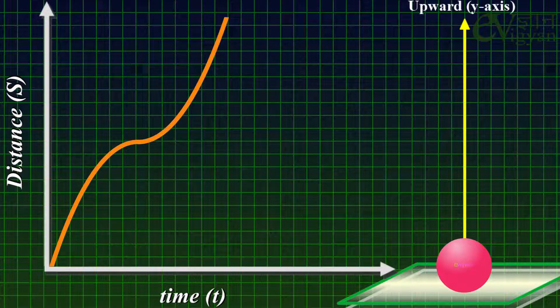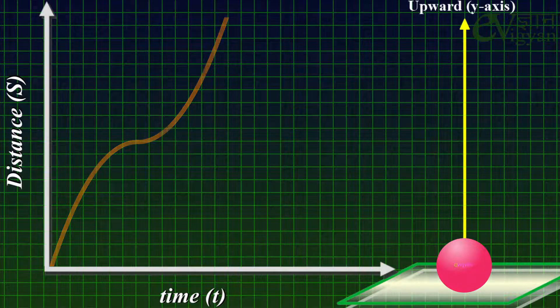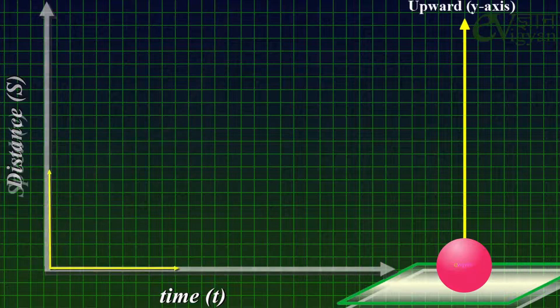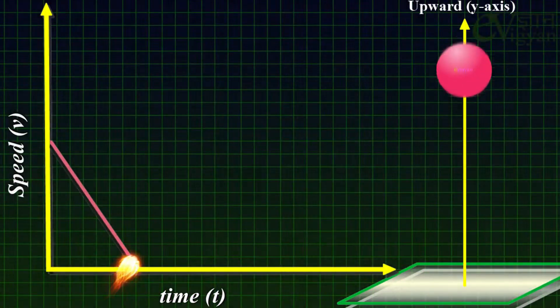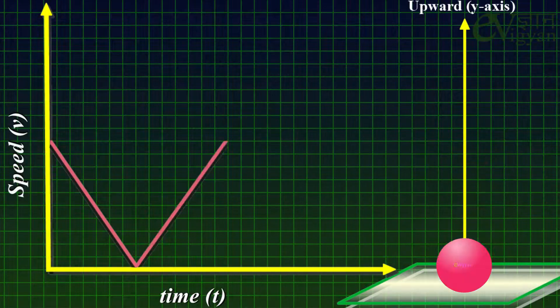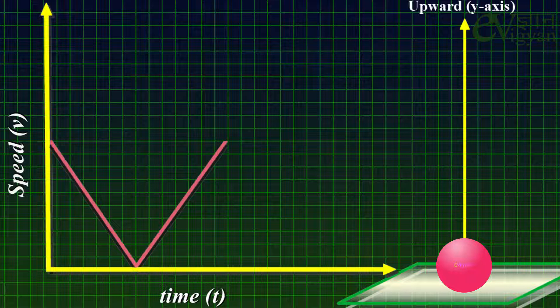So the instantaneous speed of the ball is maximum when it is at the lowest position and 0 at its highest position. This can also be visualized in the speed-time graph of the motion of this ball. Since speed is a scalar quantity, it doesn't depend on the direction of motion of the particle, and that's why it is always positive.